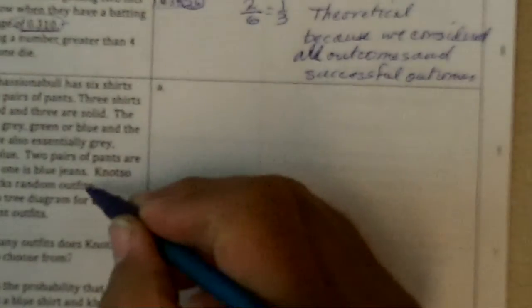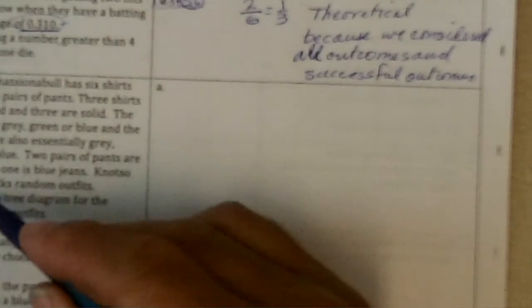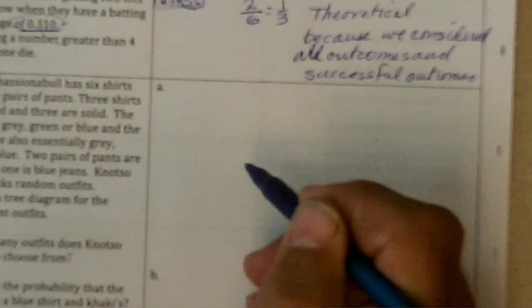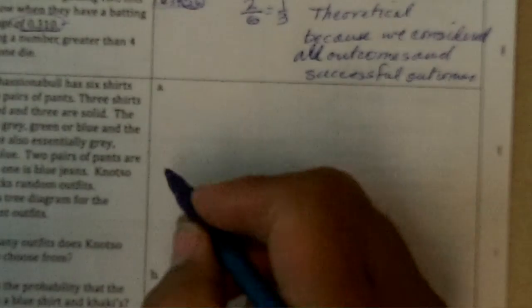Knotsofashionable has six shirts and three pairs of pants. Three shirts are striped and three are solid. The solids are gray, green, and blue. The striped are also essentially gray, green, or blue. Two pair of pants are khaki and one is blue jeans. So if you're going to pick outfits here, Knotsofashionable always picks random outfits. So therefore, his first choice might be his pants or it might be his shirt. I'm going to go with shirt.